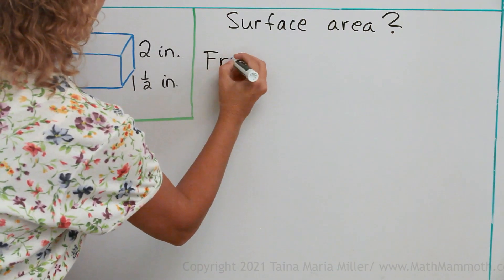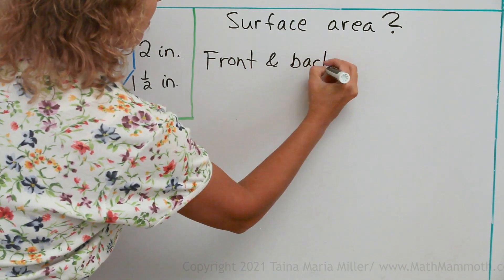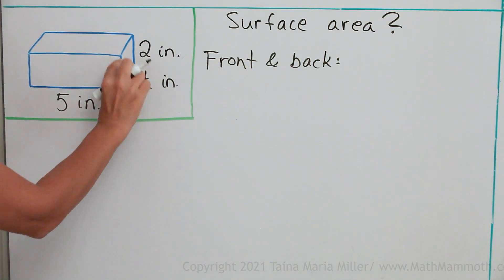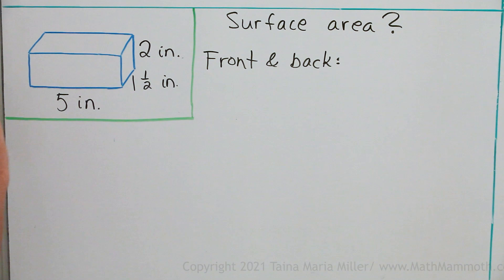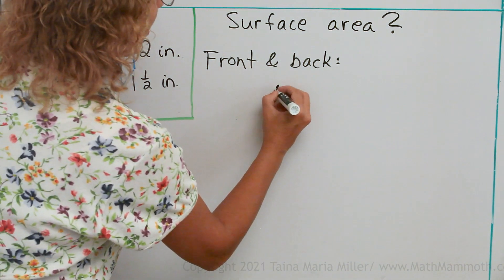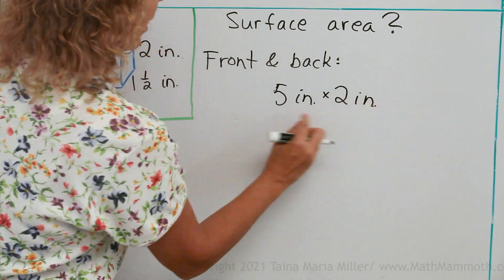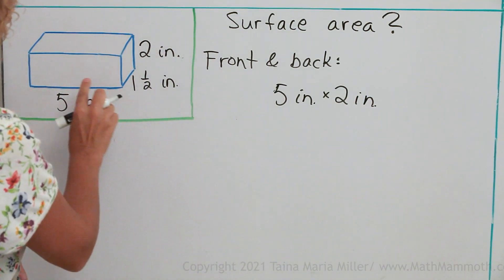Let's take the front and back. The front here is 5 inches, and then the height here, which was 2 inches. So 5 inches times 2 inches, which makes 10 square inches.